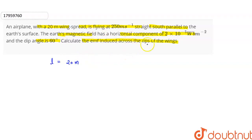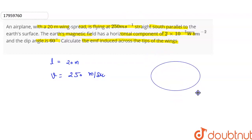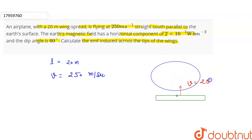The speed of the aeroplane is 250 meters per second. Here, the aeroplane is flying south parallel to the earth's surface. Here is our aeroplane, and the wing spread has a length of 20 meters. The aeroplane moves at a speed of 250 meters per second. Here is the horizontal component — 2 × 10⁻⁵ — and here is the vertical component.